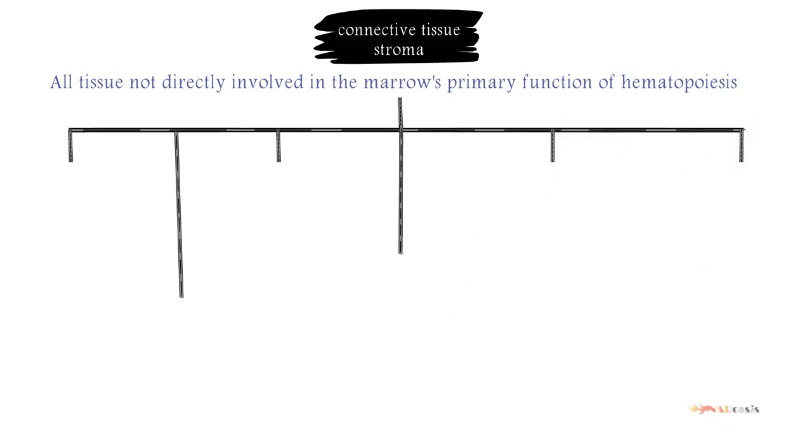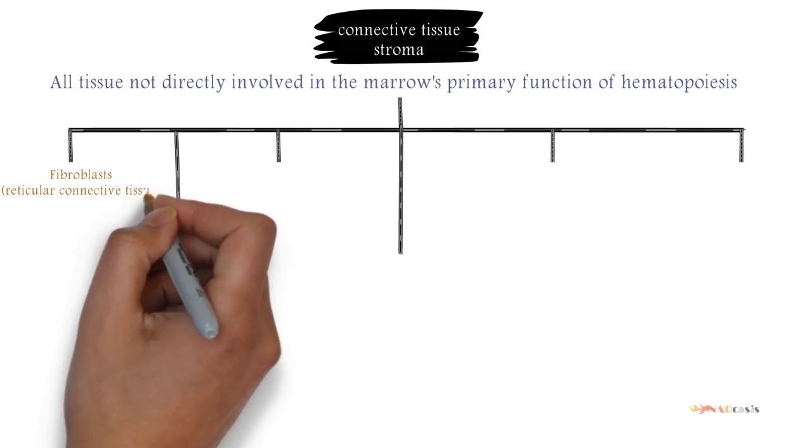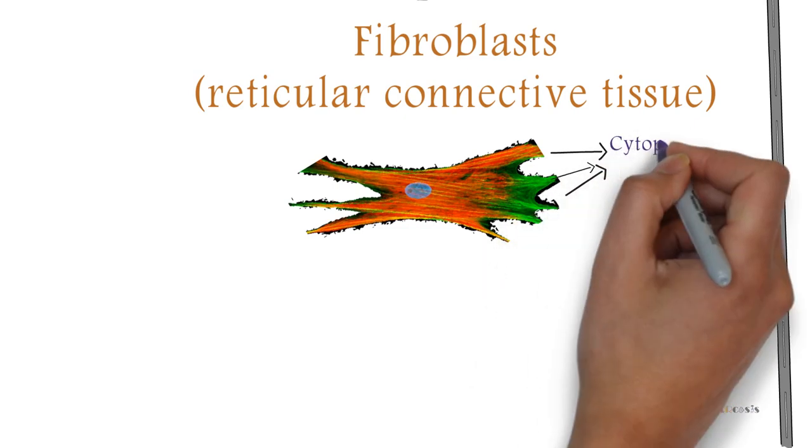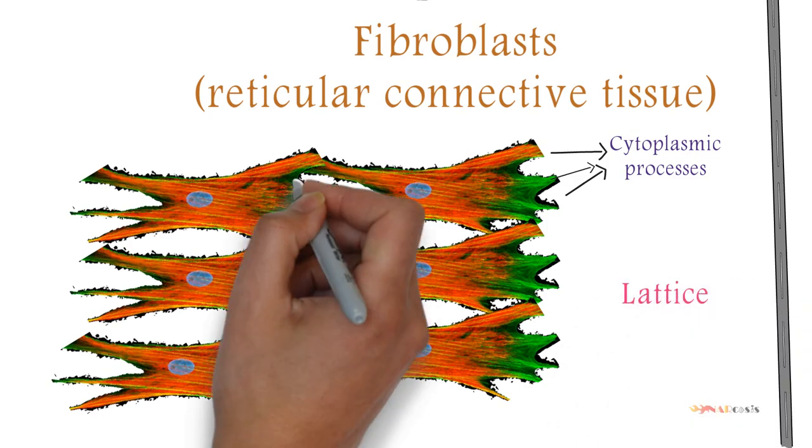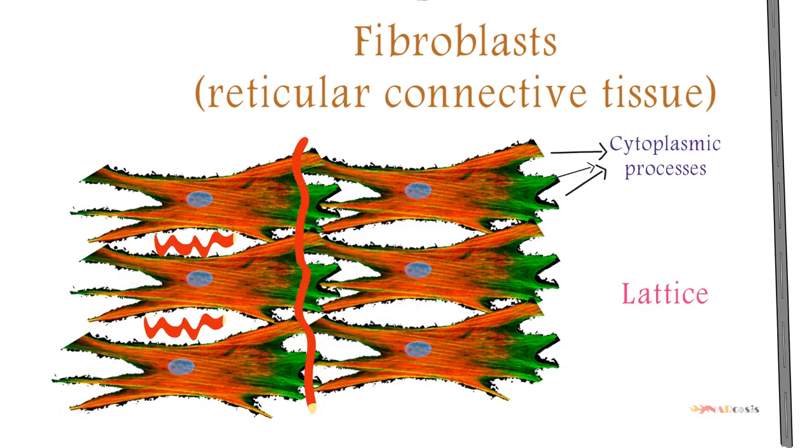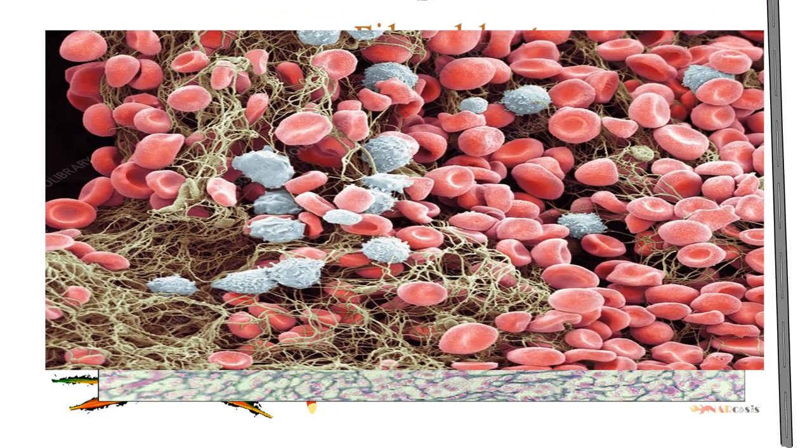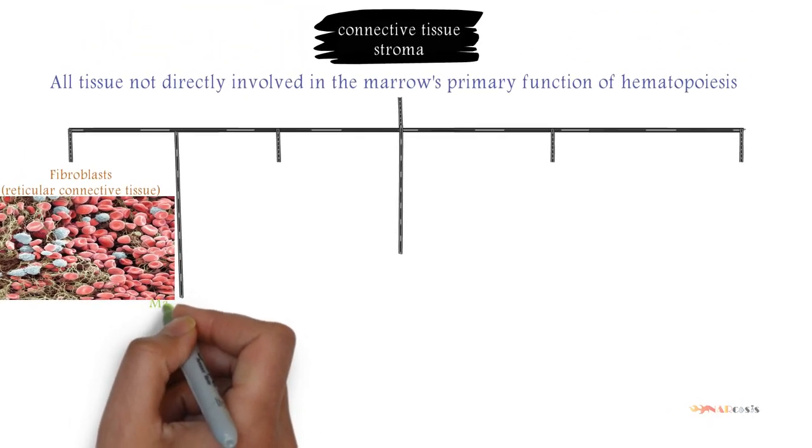First we have the reticular fibroblastoid cells. These cells form the adventitial surfaces of the vascular sinuses and extend cytoplasmic processes to create a lattice in which blood cells are found. The lattice itself can be demonstrated by reticulin stains of marrow sections, while the conformation of the meshwork of reticulin and location of hematopoietic cells in the network of vascular sinuses is illustrated by scanning electron microscopy.